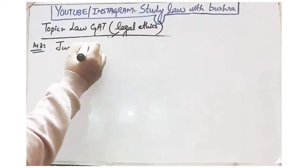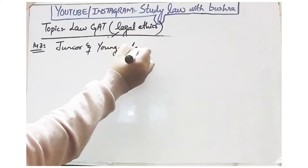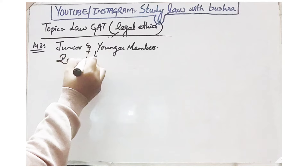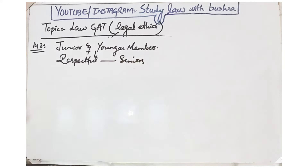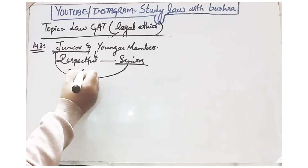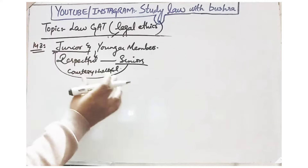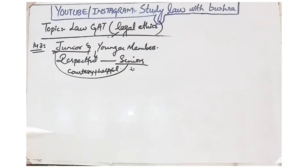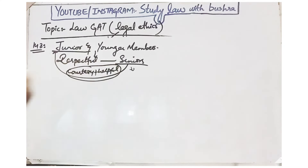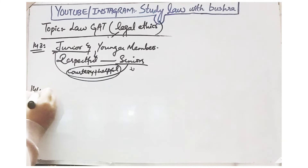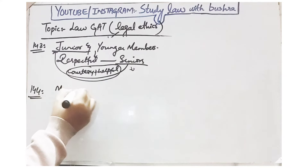Rule 143 kehta hai: junior and younger members should always be respectful to senior and elder members. Jo junior hain — jo baad mein enroll hue hain — unko hamesha apne seniors ki, apne elder members ki izzat karni hai. Aur isi tarah jo senior members hain, they should not only be courteous but also helpful to their juniors and younger members. Senior ka kaam banta hai ki agar kisi junior ko koi mushkil pesh aa rahi hai to woh uski help kare.